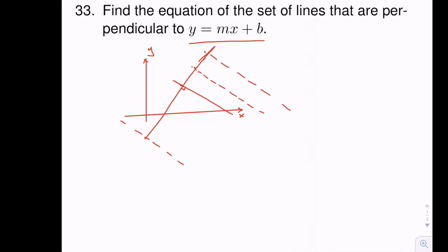If we call this angle alpha, we know that the slope of the given line m is going to be tangent of alpha. The slope of the perpendicular lines is tangent of another angle, which we'll call beta. So the angle on the other side is 180 minus beta, and therefore the slope m prime of the set of lines we're looking for will be tangent of 180 minus beta.